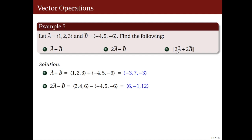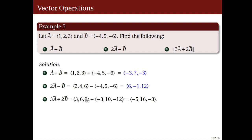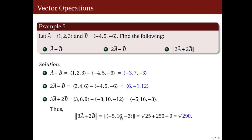Now, let us find the norm of the vector 3a + 2b. First, 3a = (3, 6, 9) and 2b = (−8, 10, −12). Adding these: 3 − 8 = −5, 6 + 10 = 16, and 9 + (−12) = −3, so 3a + 2b = (−5, 16, −3). Taking the norm, we get the square root of 25 + 256 + 9, which equals the square root of 290.